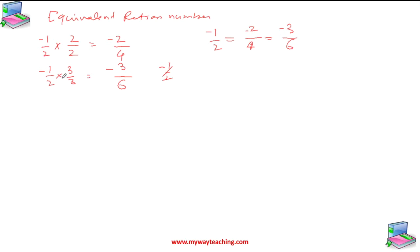Similarly, if you multiply by 4/4 or 5/5, these are also equivalent rational numbers.